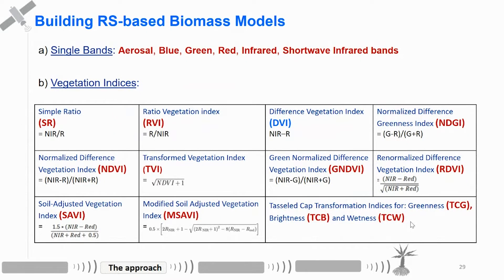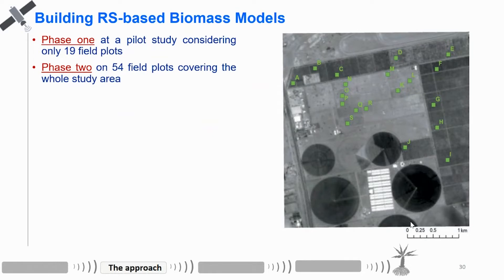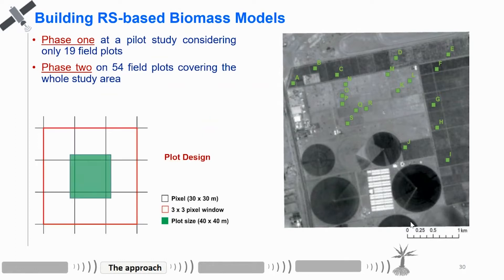These are the remote sensing variables used — single bands and vegetation indices. We have 13 vegetation indices and their equations. When building the remote sensing-based biomass model, we did it in two phases: a pilot study with 19 field plots, then we enlarged it to 54. The plot design is 40 by 40 meters, and when extracting remote sensing variables we consider a window of three by three, taking the mean of the remote sensing variable.